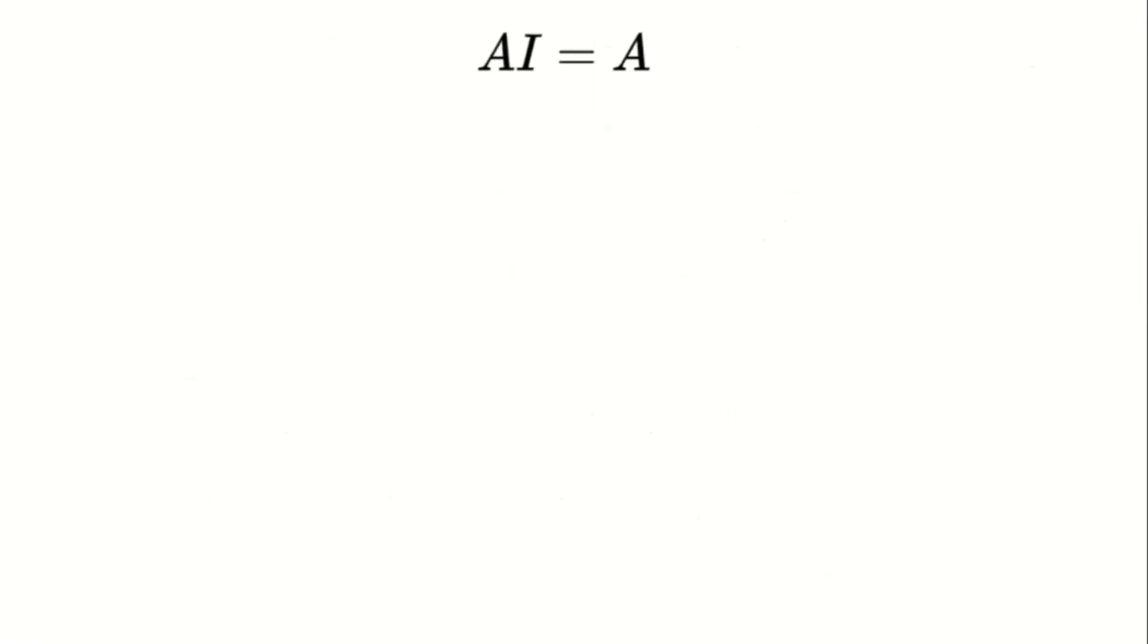The identity matrix is a matrix that, when multiplied by another matrix, returns the same matrix. Suppose we have a square matrix A with elements 1, 2, 3, and 4.